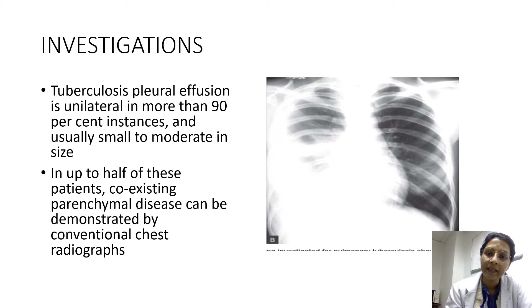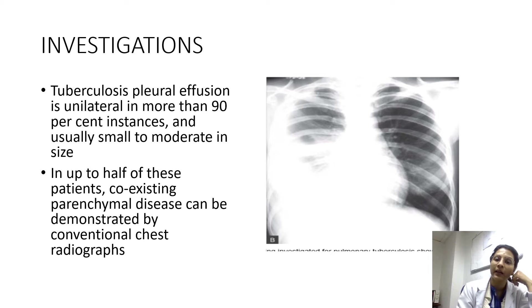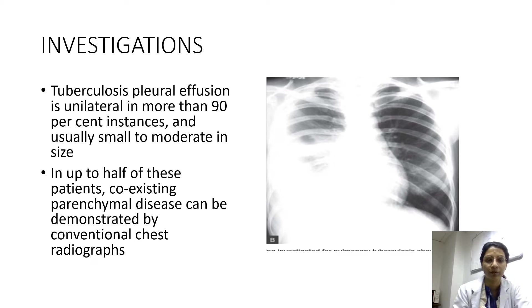The costophrenic angle is formed by the diaphragm and the internal costal margin, which is normally sharp. In a case of pleural effusion, this costophrenic angle is obliterated — as seen here, representing a moderate-sized pleural effusion.